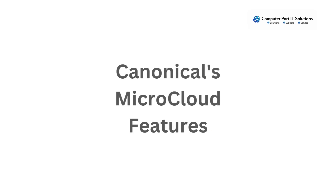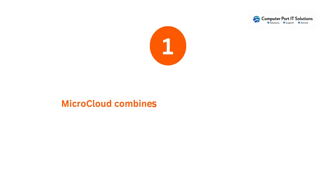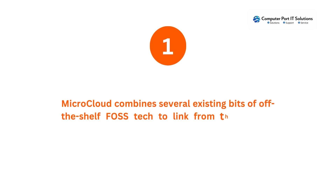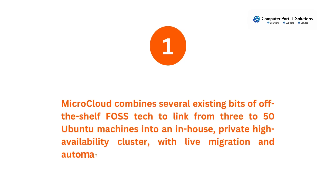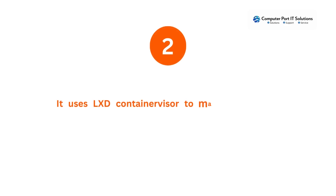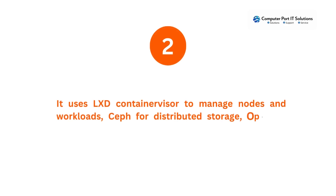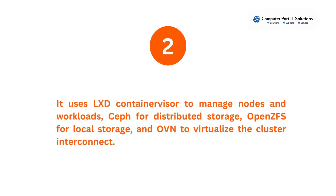Canonical's MicroCloud combines several existing bits of off-the-shelf FOSS tech to link from 3 to 50 Ubuntu machines into an in-house, private high-availability cluster, with live migration and automatic failover. It uses LXD Containervisor to manage nodes and workloads, Ceph for distributed storage, OpenCeph for local storage, and OVN to virtualize the cluster interconnect.